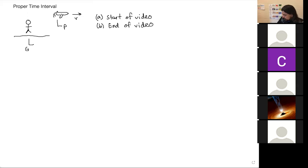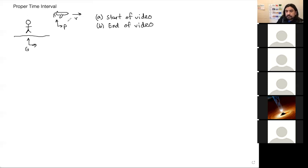A student named Cade answers: it would be the person on the plane. Exactly — the person in the plane is the one measuring the proper time interval.